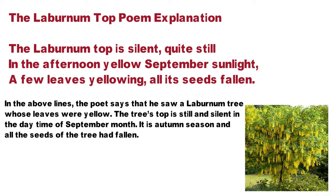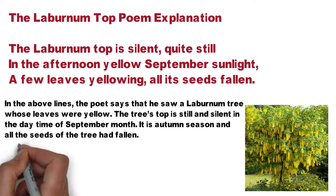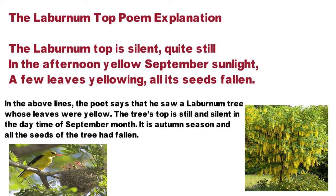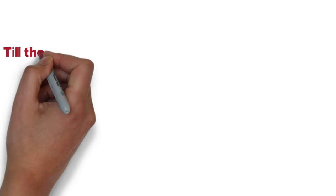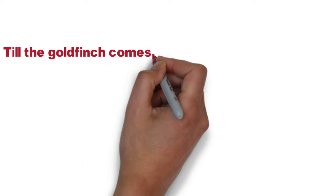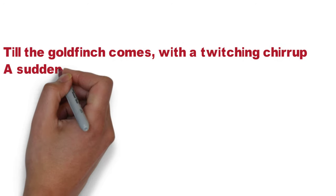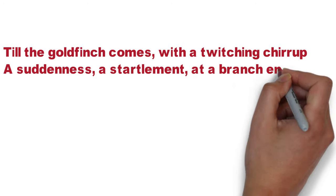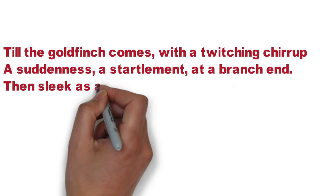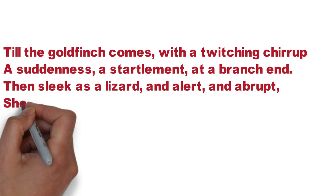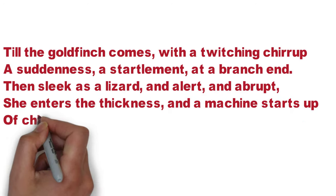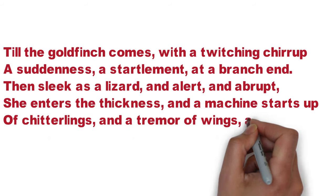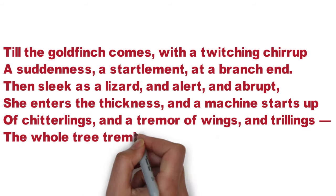Key words in this poem represent Silence, Death, and Beauty. We are already talking about the tree. The second stanza reads: 'Till the goldfinch comes with a twitching cherub, a suddenness, a settlement at a branching, then sleek as a lizard and alert and abrupt. She enters the thickness and a machine starts up of chitterlings and a tremor of wings and trillings. The whole tree trembles and thrills.'